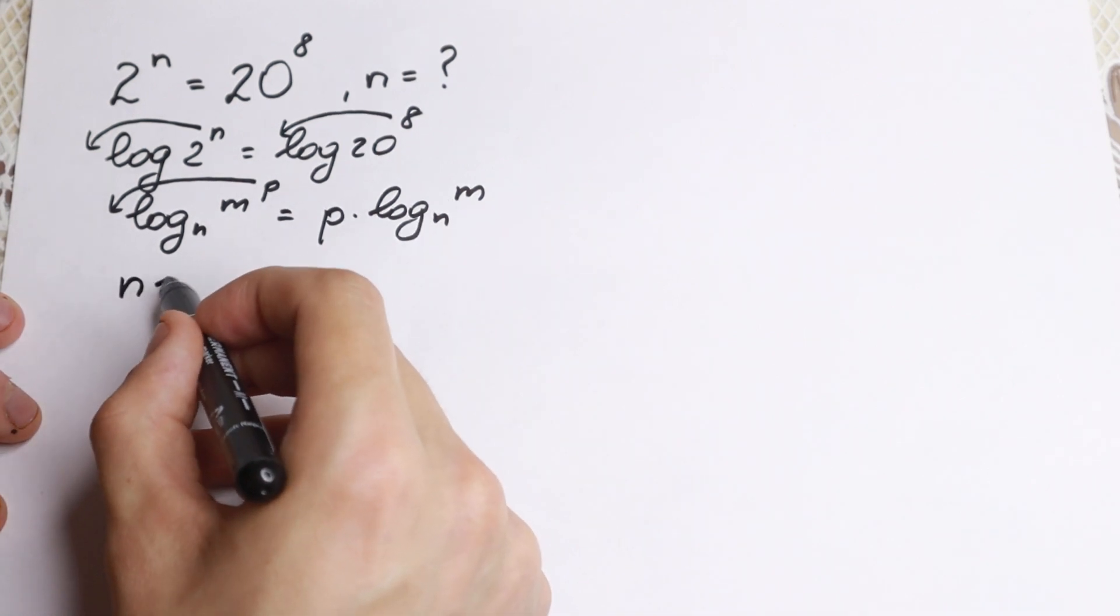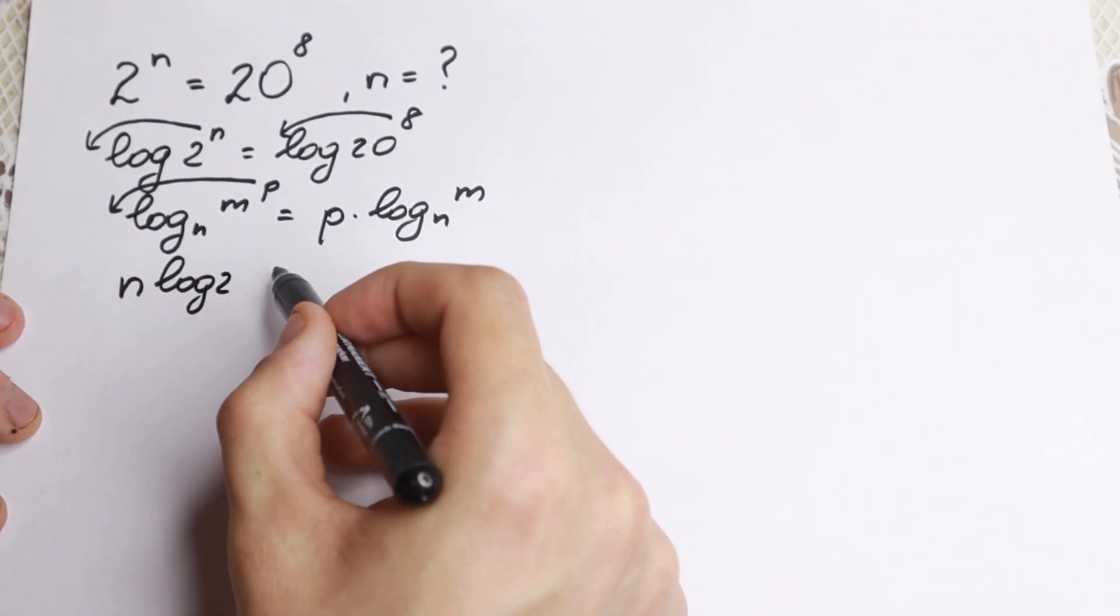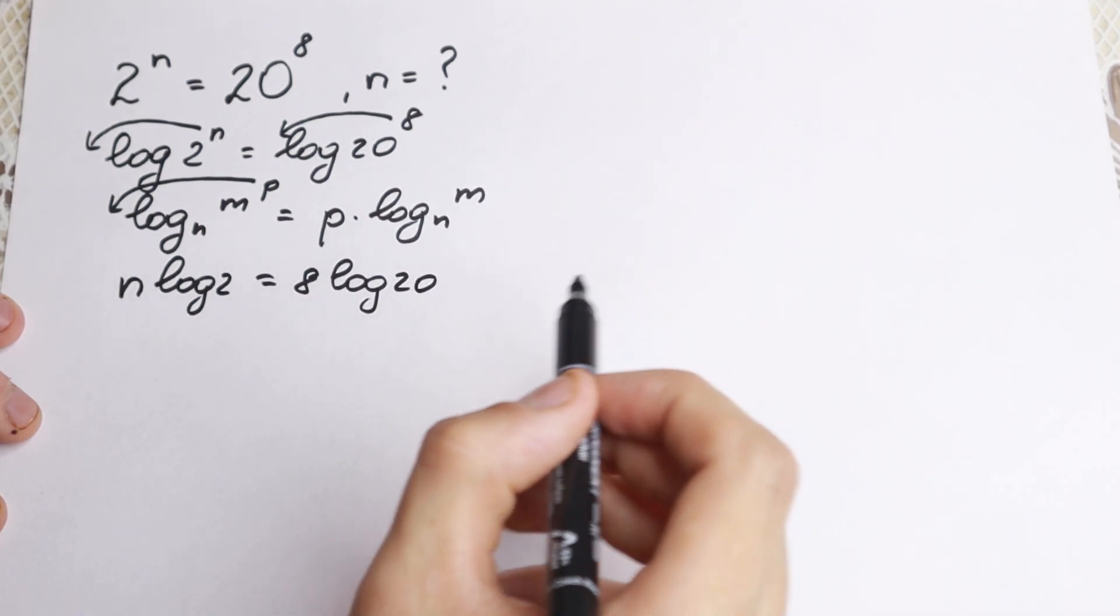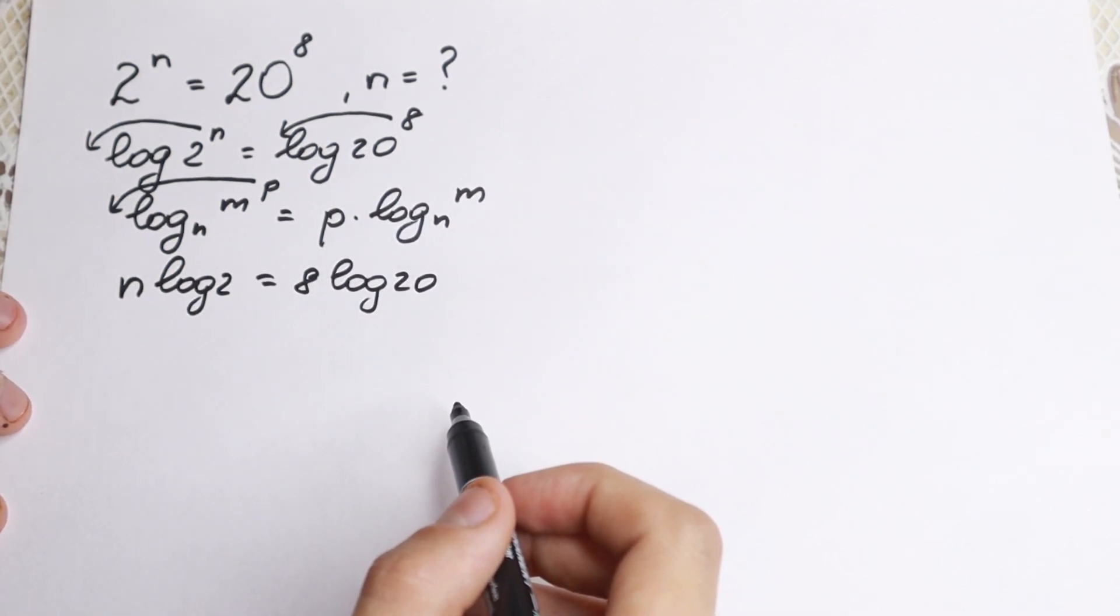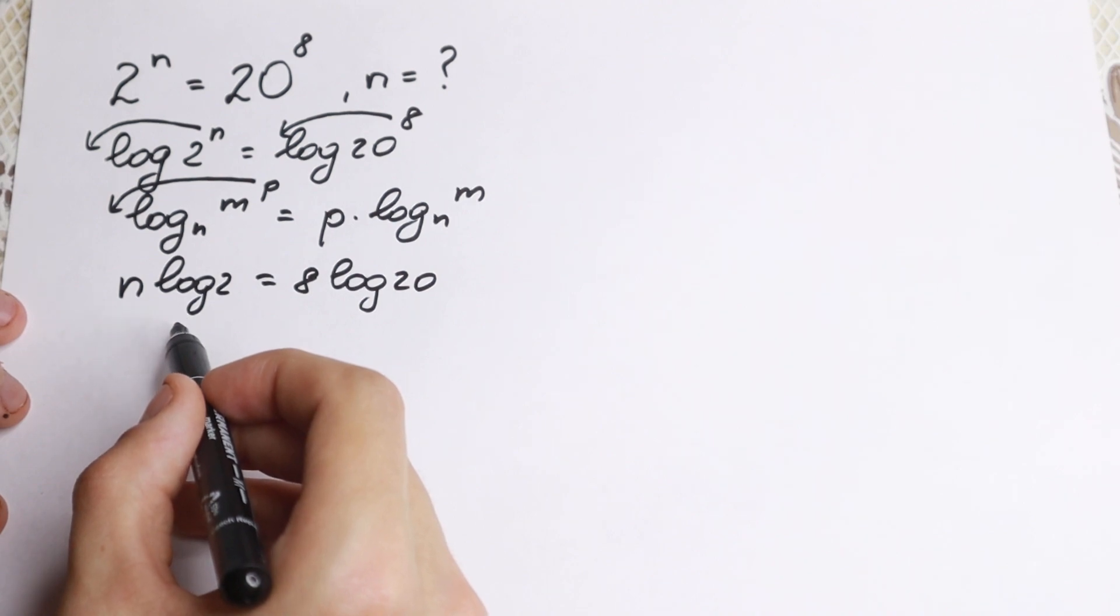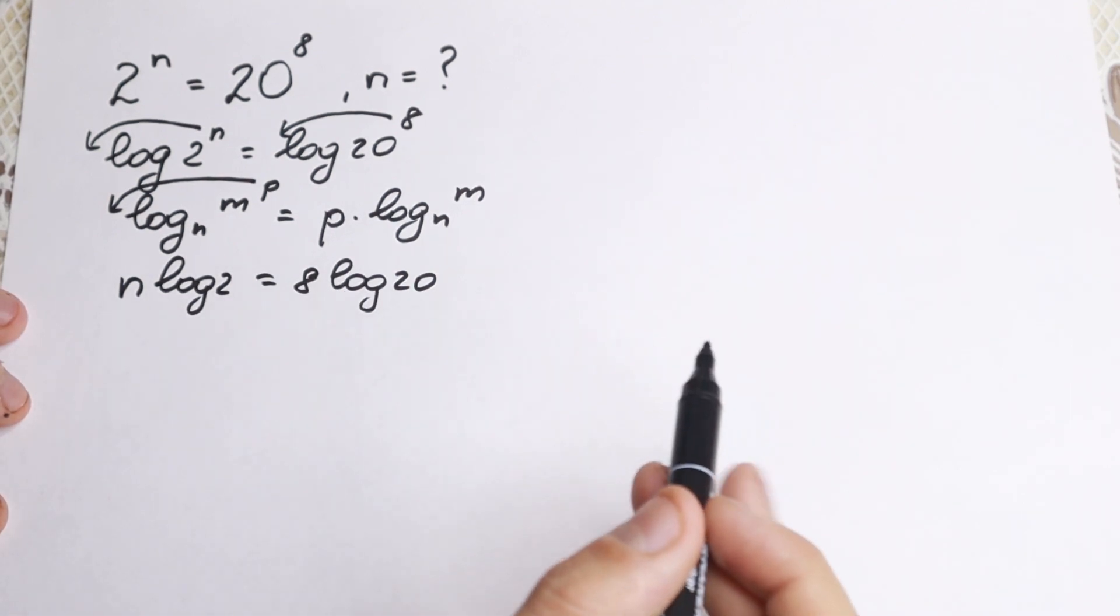Let's do this, we have n log 2 equal to 8 log 20. Okay, we just write it as a constant right here. And right now we have n, so we have this constant, we don't need this constant because we need only our n equal to.